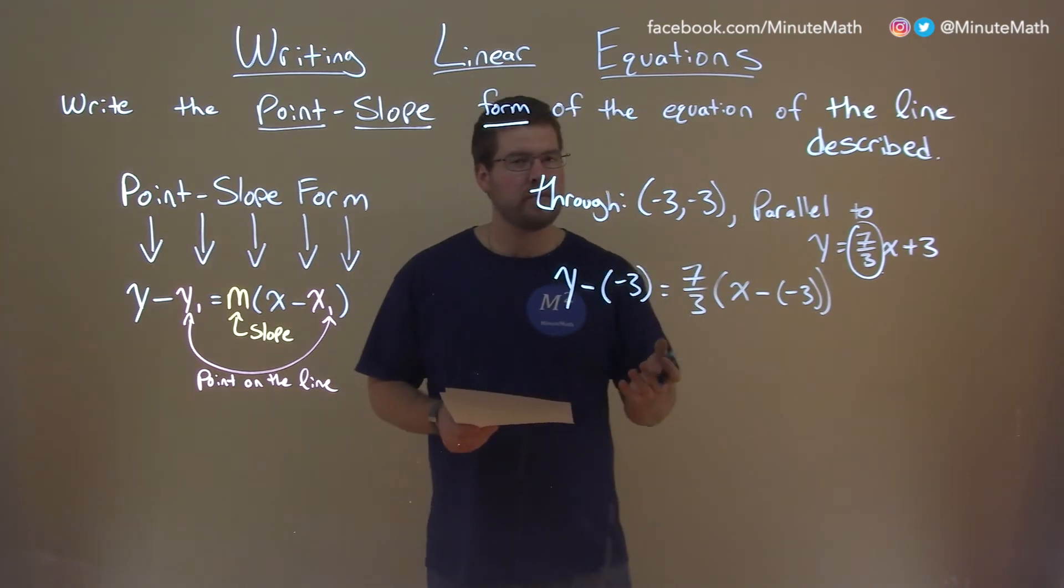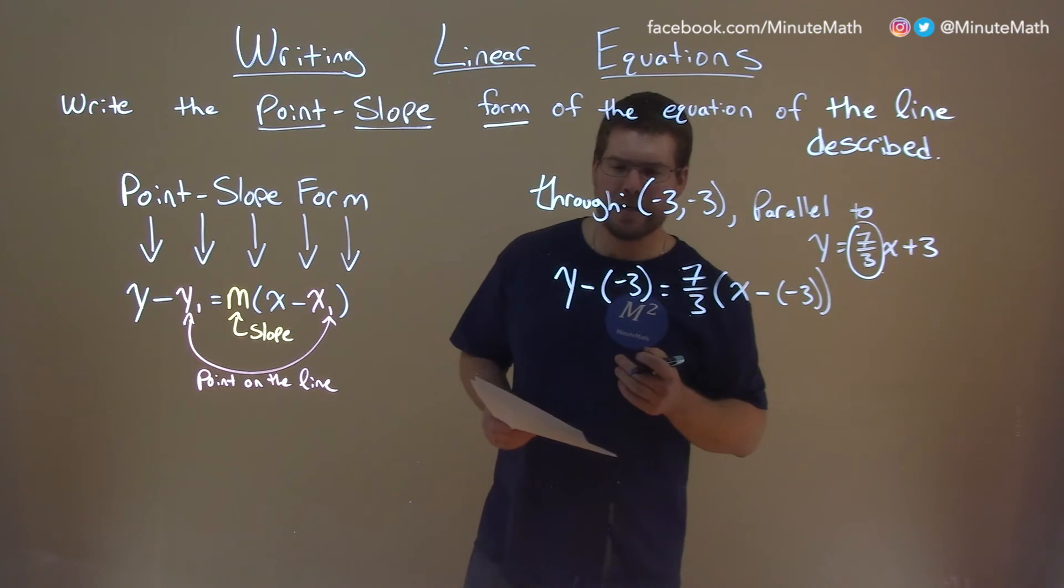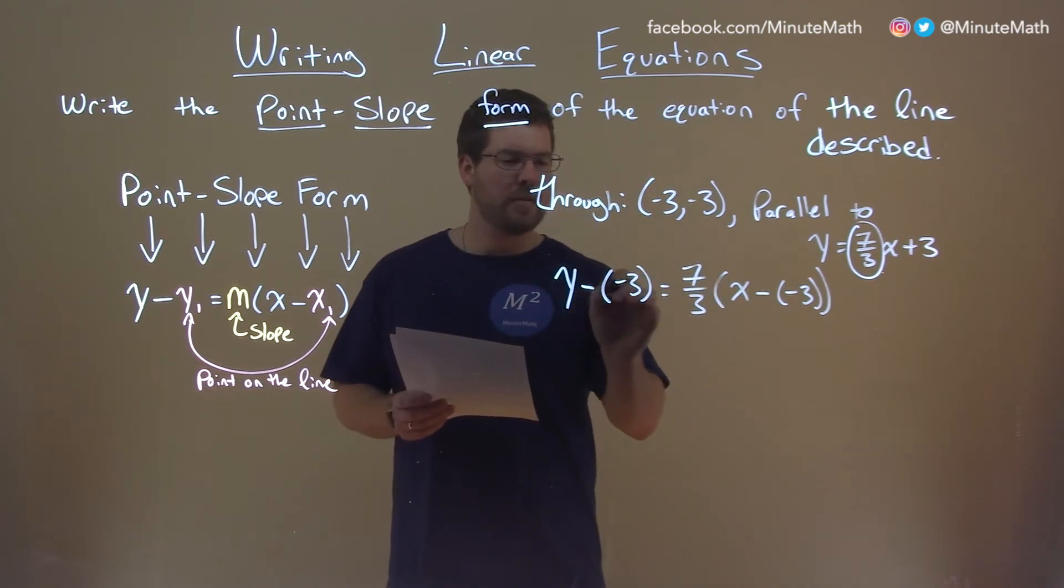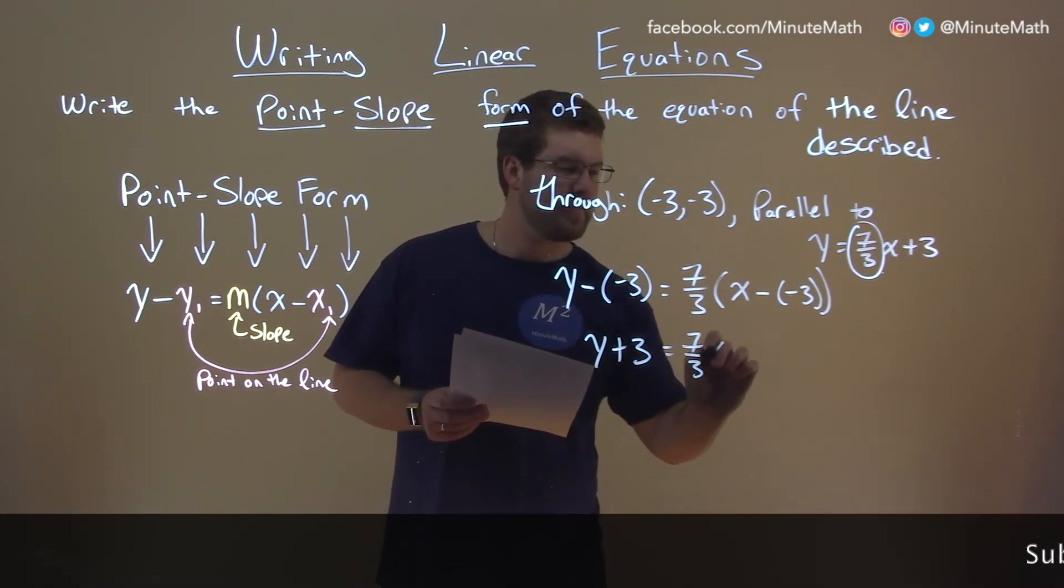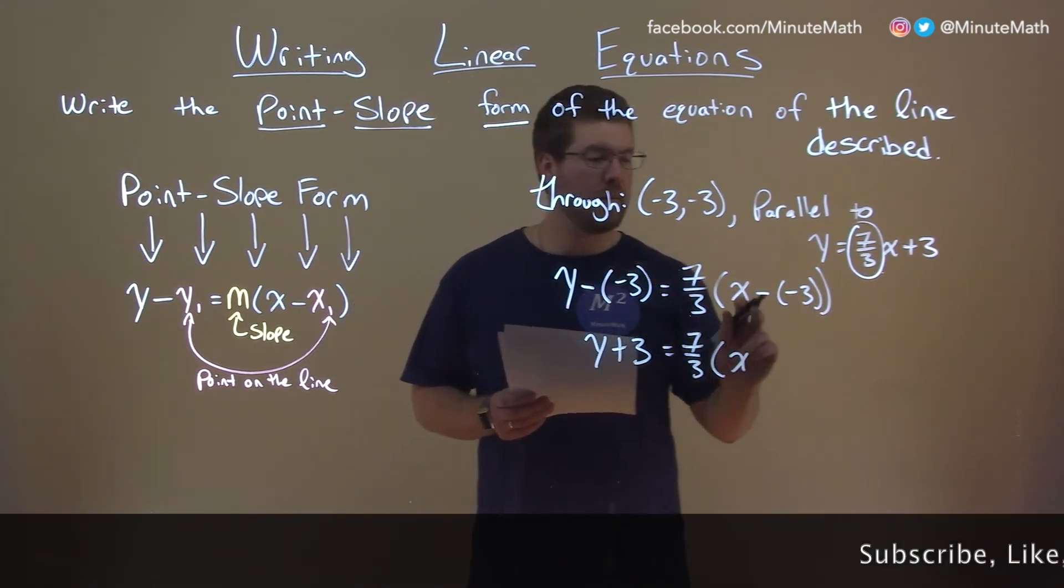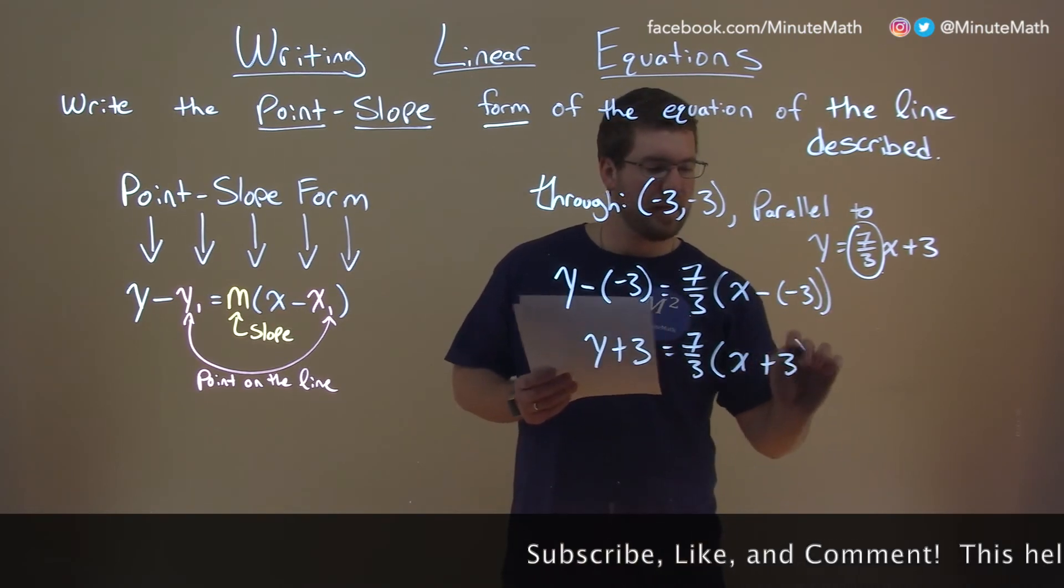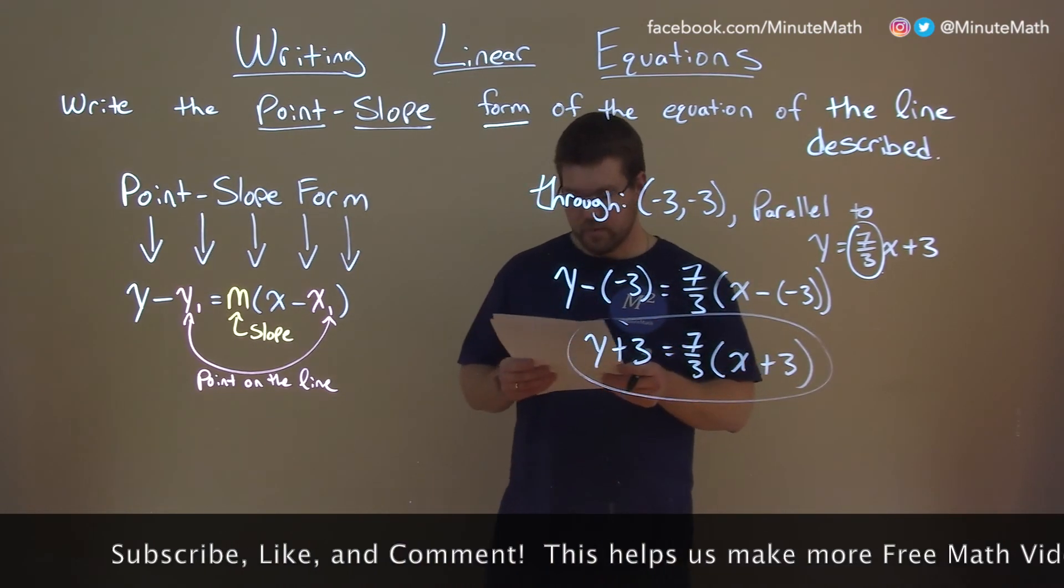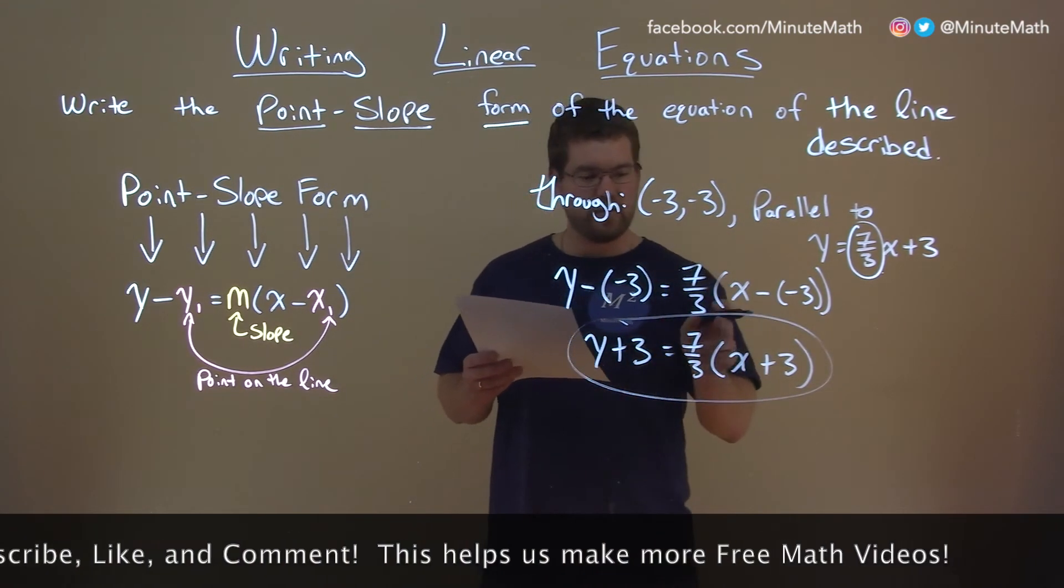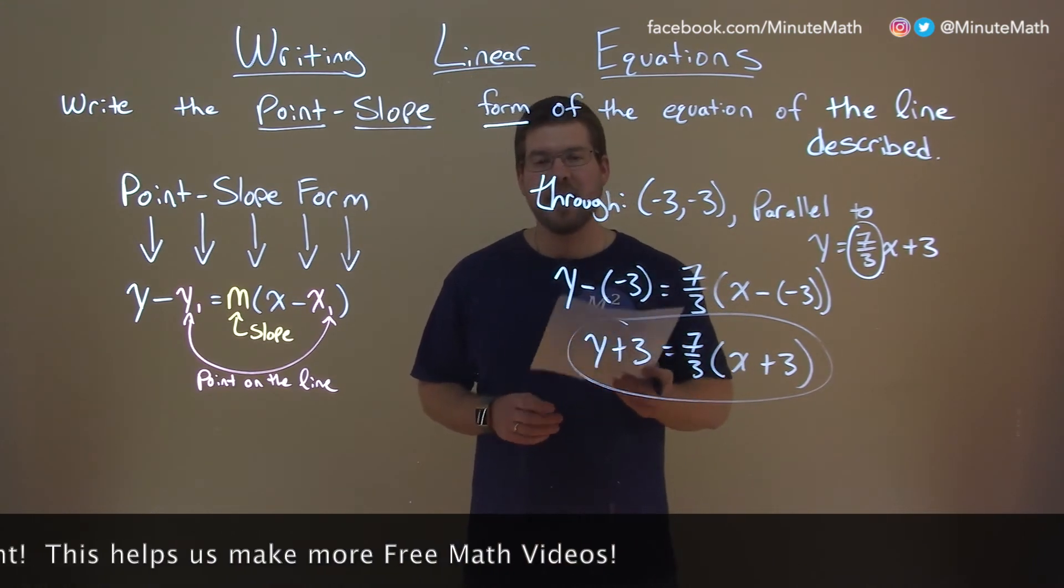Now let's simplify this. Let's get rid of the negatives, right? Because two negatives make a positive. So we have minus a negative is plus a positive. So y plus 3 equals 7 thirds x. Same thing here: minus a negative, plus a positive, x plus 3. And now we have it in point-slope form: y plus 3 equals 7 thirds x plus 3. That is our final answer.